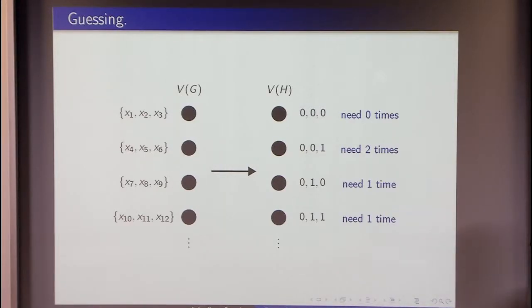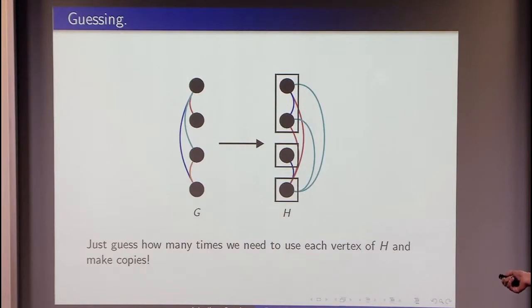The problem was that maybe this vertex is needed two times. And we cannot afford it in subgraph isomorphism because we can use this only once. But what if we knew that this one is needed two times? This is needed zero, this is needed one, this is needed one time. If we knew that, then we can just copy those vertices that many times. This one is copied twice. And we have perfect instance of subgraph isomorphism now.